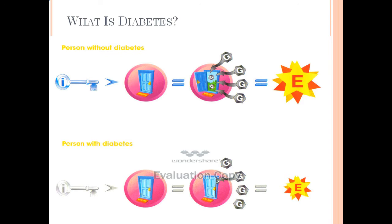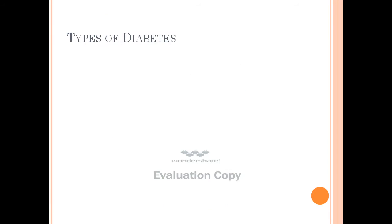Whereas in a person with diabetes, there is either decreased insulin production from the pancreas, or for any reason this insulin fails to act on the cell and there is failure of opening of this door. There is no glucose which enters into the cell and there is decreased energy production. Basically, what happens is there is increased glucose in the blood and also some of this comes out in the urine.